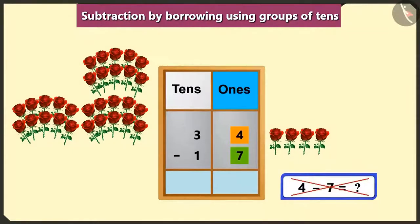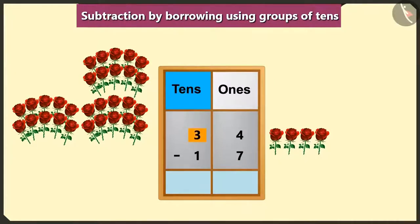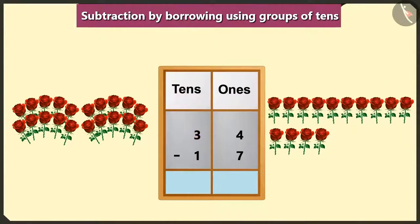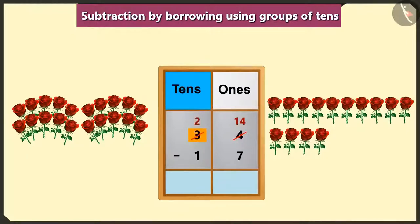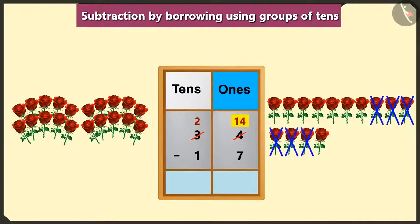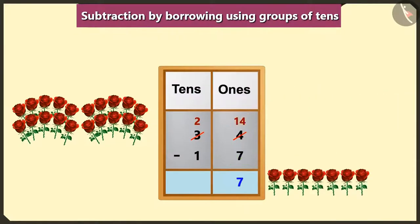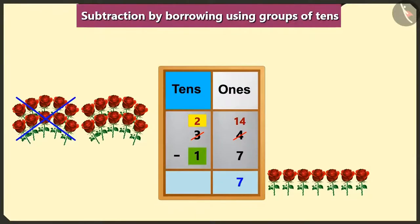We cannot subtract 7 from 4 in the box of ones. So we will borrow 1 ten from 3 tens in the box of tens. Now we will write 14 ones instead of 4 in the box of ones, and 2 tens instead of 3 tens in the box of tens. If we subtract 7 from 14 in the place of ones, then we will have 7 left in the place of ones. Now if we subtract 1 ten from 2 tens, then we will have 1 ten in the box of tens.